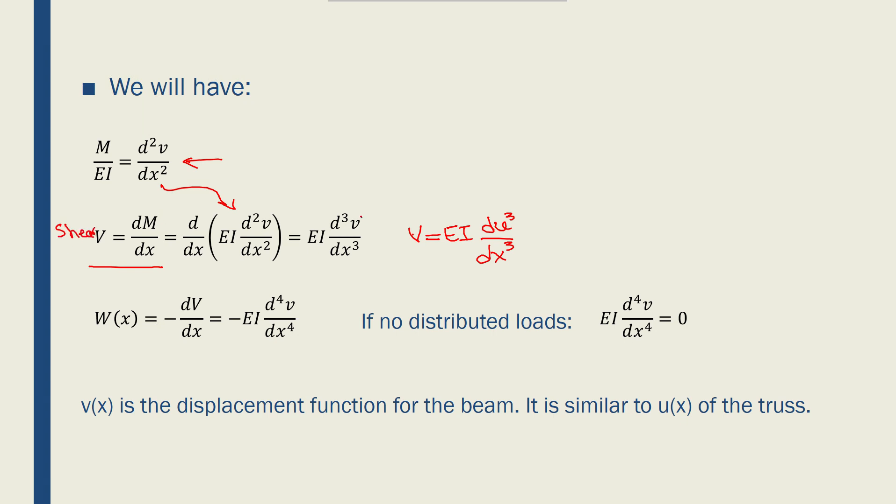And this lower v is displacement in y direction. It's important not to confuse them. And actually this v is the displacement function similar to u that we had for trusses and springs. So we're gonna have to find the v(x) for a beam in the future to find the stiffness matrix of the beam.